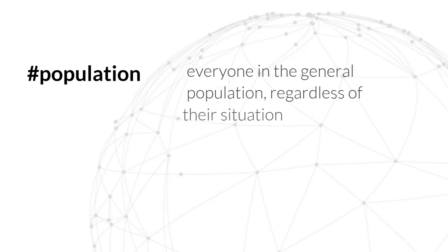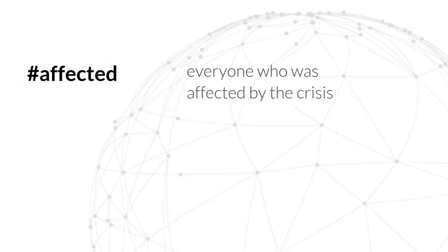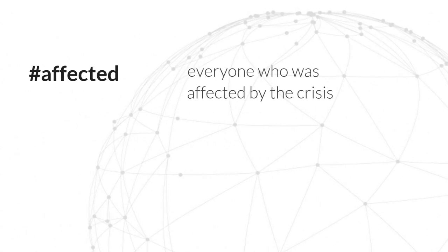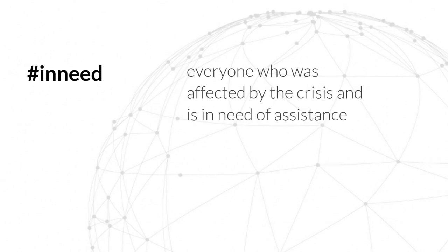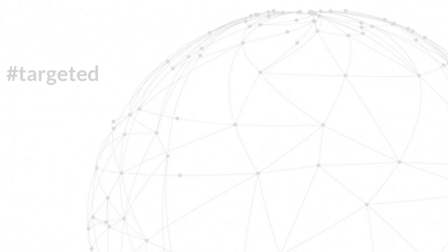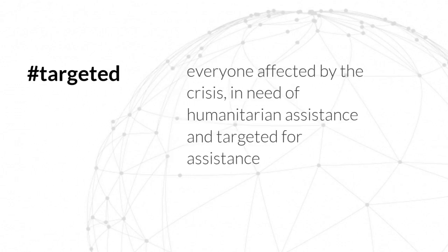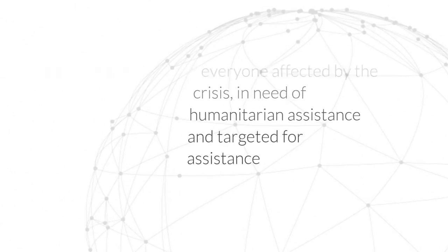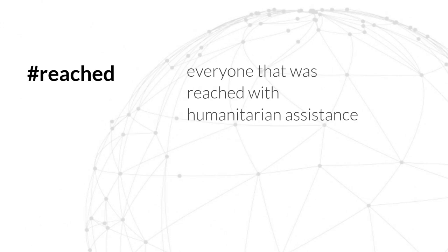The hashtag #population is used to describe everyone in the population. The hashtag #affected is used to describe everyone affected by the crisis. The hashtag #inneed is used to describe everyone affected by the crisis and in need of humanitarian assistance. The hashtag #targeted is used to describe everyone affected by the crisis, in need of assistance, and targeted for assistance. And finally, the hashtag #reached is used to describe everyone reached with assistance.